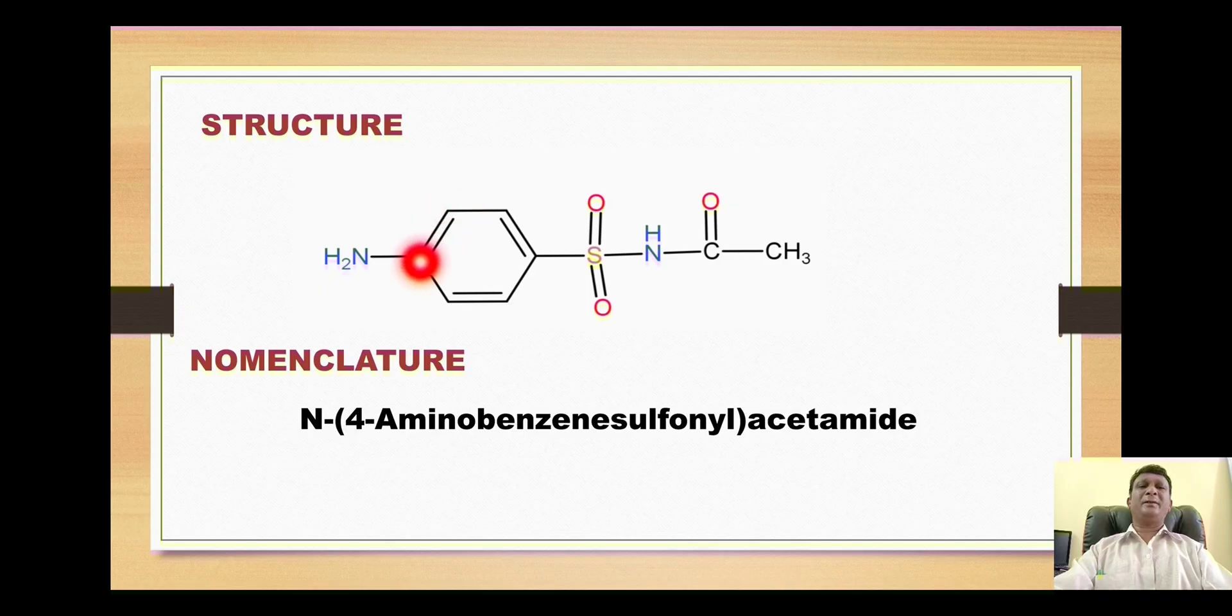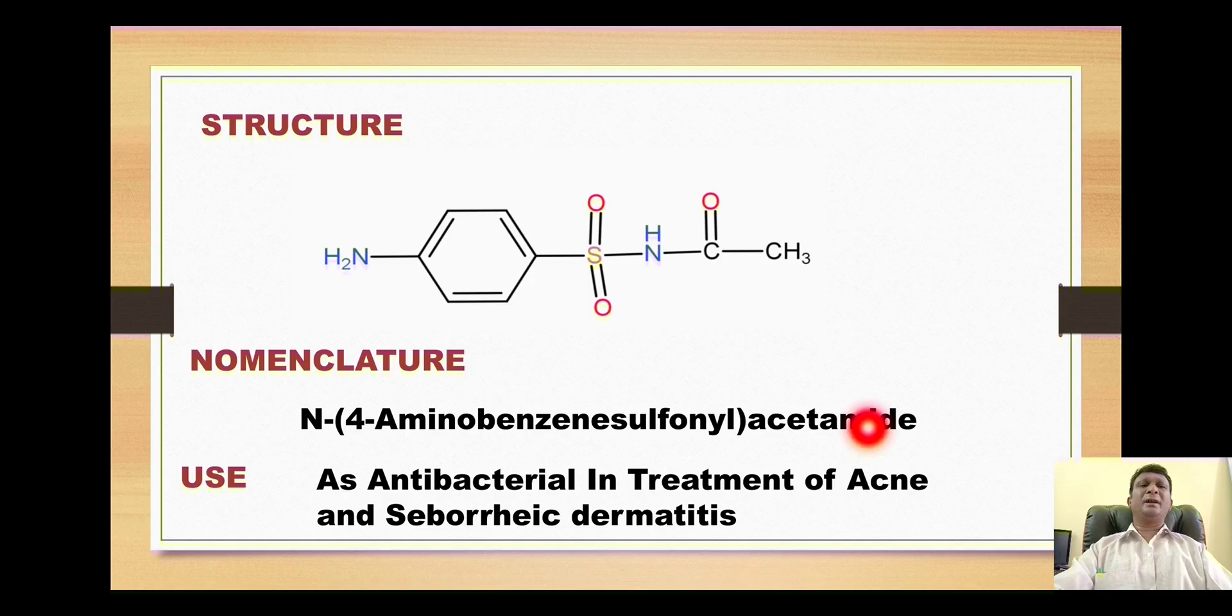This is 2, this is 3, and this is 4. On the fourth position we have an amino group so we call it 4-aminobenzene. This SO2 is called sulfonyl. That's why the complete IUPAC name of sulfacetamide is N-4-aminobenzene sulfonyl acetamide. This drug is used as antibacterial in treatment of acne and seborrheic dermatitis.